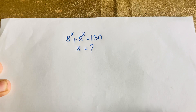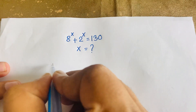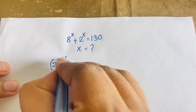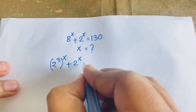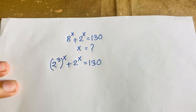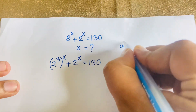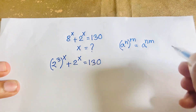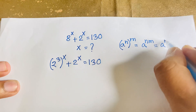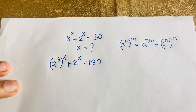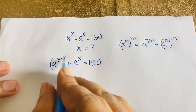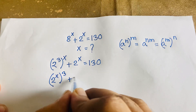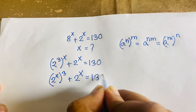Our question is 8 to the power x plus 2 to the power x equals 130. I can rewrite 8 as 2 to the power 3, so 8 to the power x becomes (2^3) to the power x. Using the exponential rule, a to the power n, whole to the power m equals a to the power n times m, this gives us 2 to the power 3x, plus 2 to the power x, equals 130.